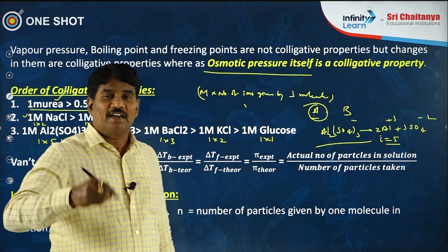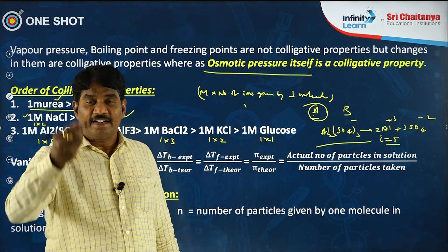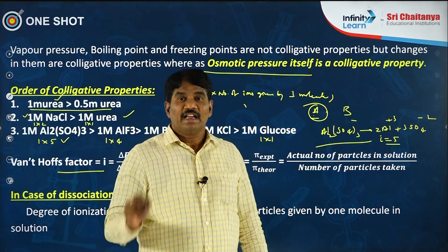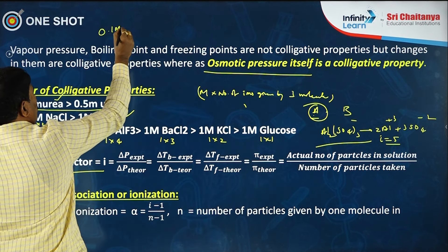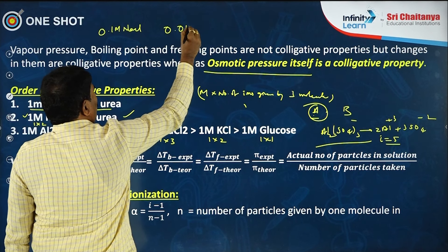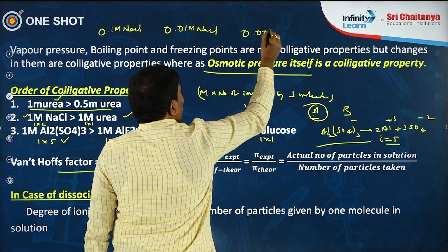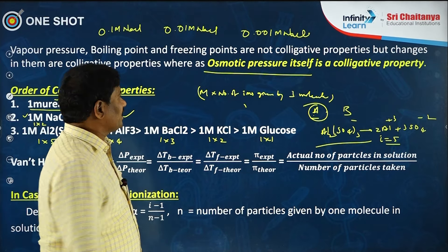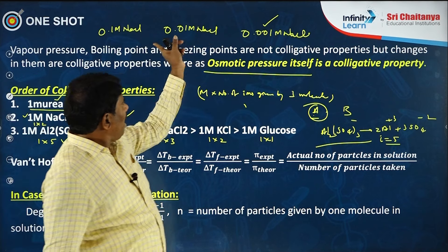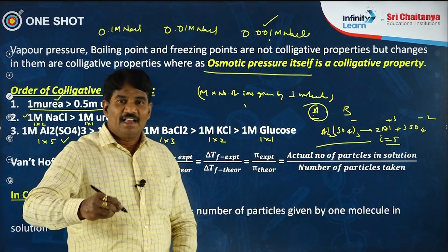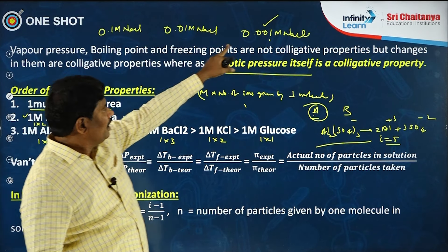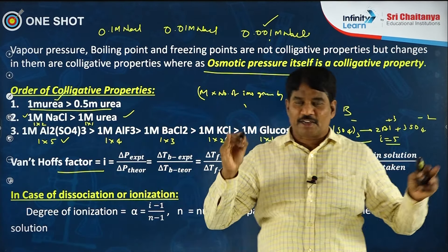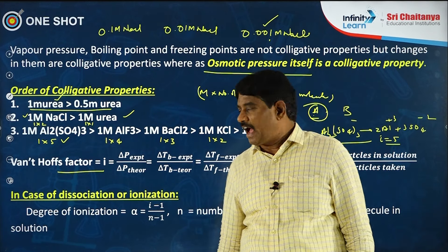Van't Hoff's factor depends on concentration. As the concentration of an electrolyte decreases, ionization increases, so the Van't Hoff factor also increases. For example, among 0.1 M NaCl, 0.01 M NaCl, and a more dilute solution, the most dilute solution has the higher Van't Hoff factor because lower concentration means greater degree of ionization — more ions present in solution.